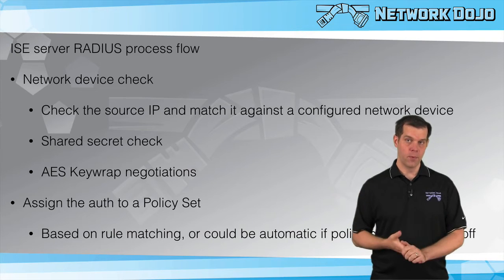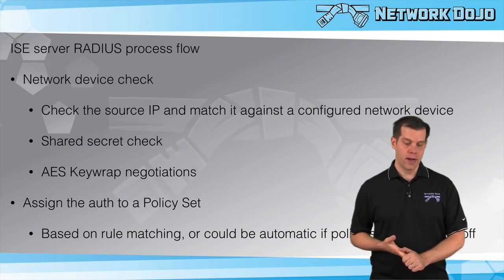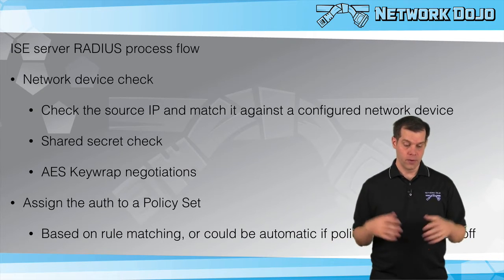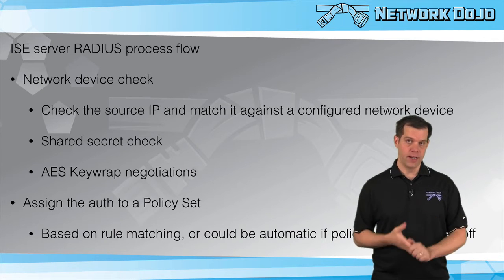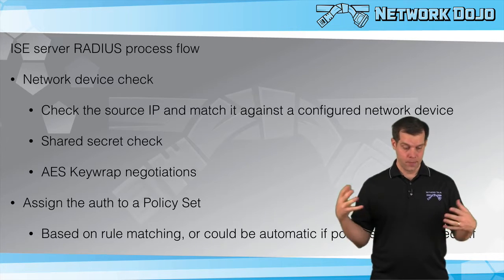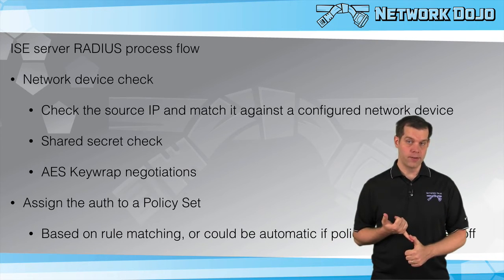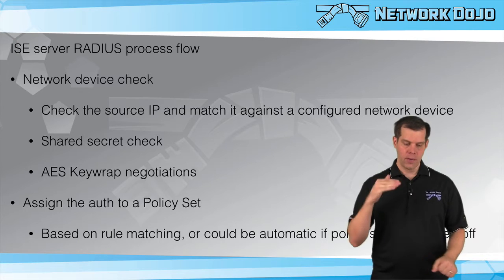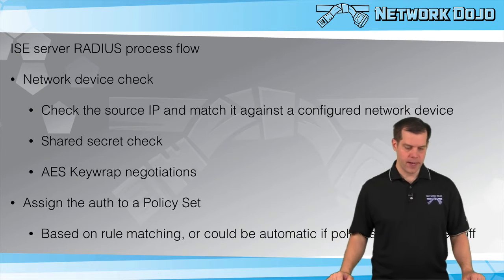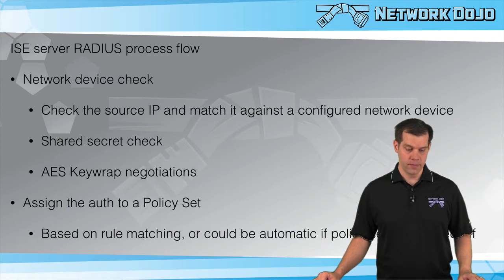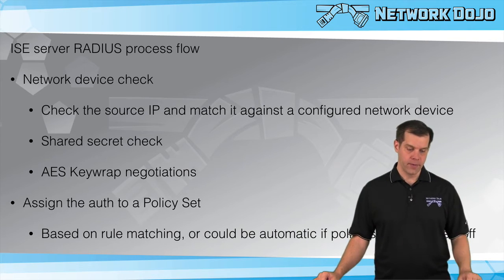Once we have our network device identified, we do one or two checks against it. First, we always do a shared secret check — the authenticator has a shared secret for the RADIUS server configured, and the RADIUS server has a shared secret for the network device; they need to match. Then there's an optional AES key wrap negotiation check. It's off by default, but if it's turned on both sides, the keys must also be identical. If any one of these checks fails, we stop and don't even get into authentication.